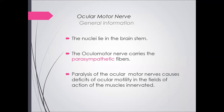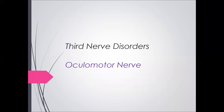There is general information about the oculomotor nerve. The nuclei lie in the midbrain — all the nuclei of the cranial nerves lie in the brain stem. The oculomotor nerve carries parasympathetic fibers, which is a characteristic feature. Paralysis of the oculomotor nerve causes deficit of ocular motility in the field of action of the muscle innervated.